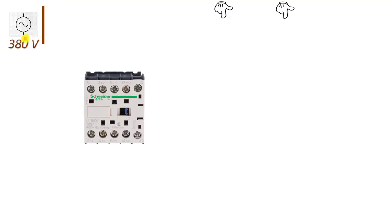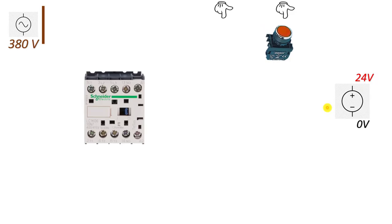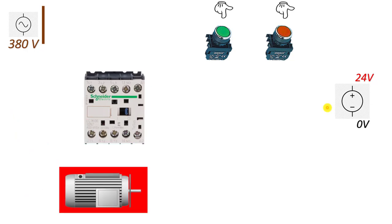Now let's look at how we connect the contactor in a physical circuit. First, we have the mains network. We pass the load voltage through the mains voltage. Then we provide the connection for the control circuit. After 380 volts mains, we have a 24-volt power supply for the control circuit. To stop and start the system, we will need stop and start buttons.